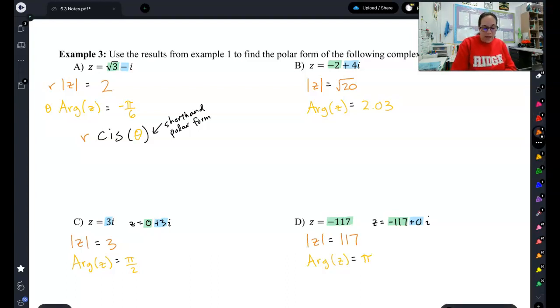So for a, I would get 2 cis negative pi over 6. And that is my answer.